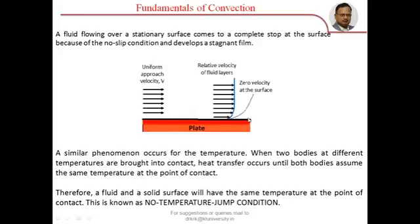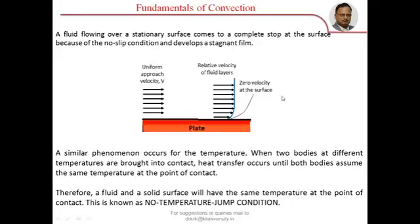Just like a stagnant film forms with zero velocity at the surface, when the fluid is flowing with a high or low temperature, any particle will attain a temperature equal to that of the plate. So a similar phenomenon occurs for temperature also. Therefore, a fluid and a solid surface will have the same temperature at the point of contact — this is known as the no-temperature-jump condition. Similarly, the velocity of the particle on the plate will always be equal to zero due to the no-slip condition, which leads to development of a stagnant film.